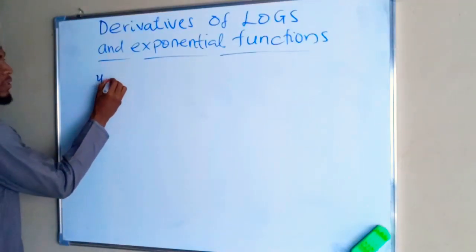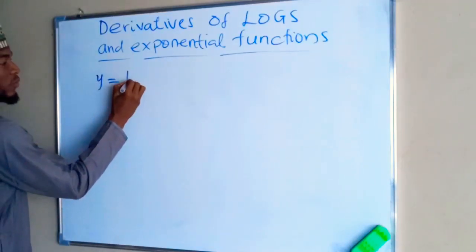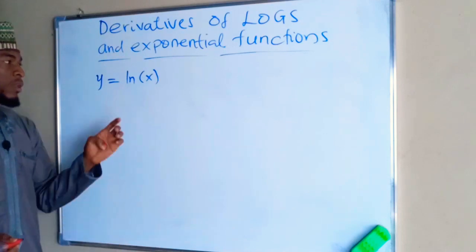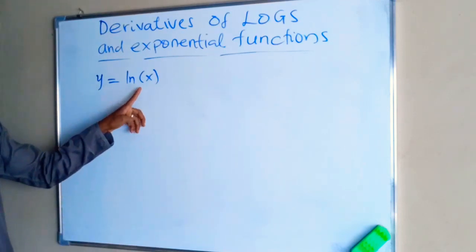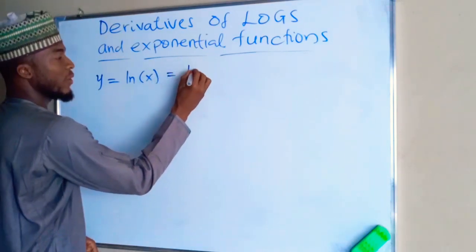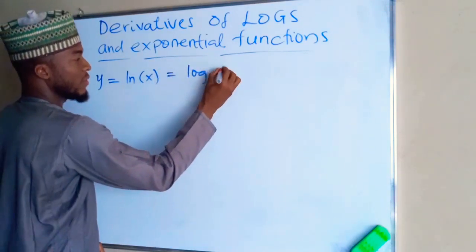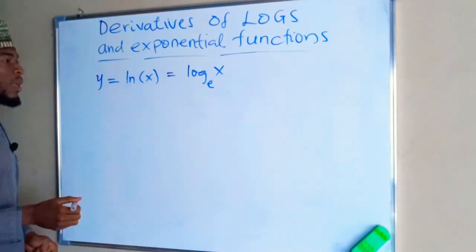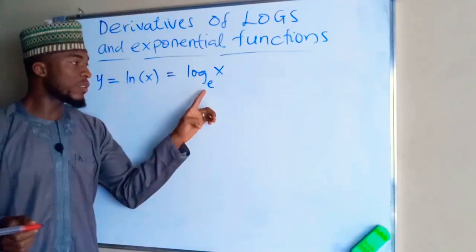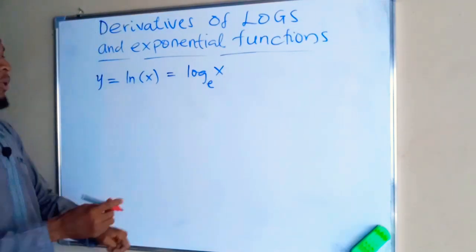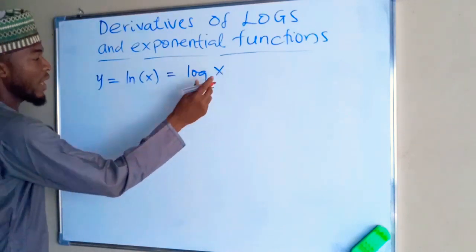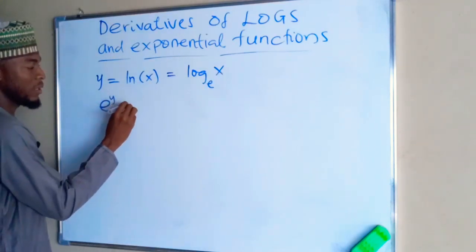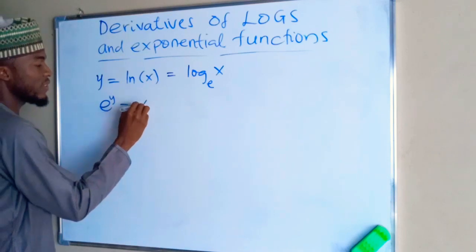For y equals ln x, this is the natural log of x, which is the same thing as log of x to the base e. From the definition of logarithm, you know that e to the power of y will give us x. So exponential y will give us x.